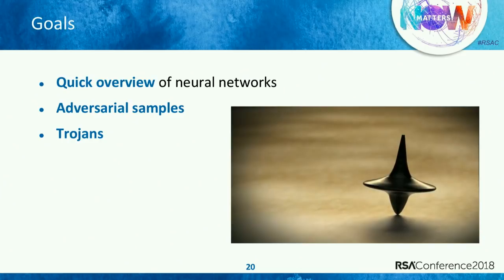I'll start with a quick overview of deep neural networks, then move on to adversarial samples — where given a defined neural network, I want to force it to produce the wrong output. I'll proceed in three stages, the third of which uses your own neural network to help attack you. In the second section, I'll focus on Trojans — where I'm no longer trying to force the wrong output, but rather to backdoor your network so it naturally produces the wrong output for values I care about. On the third stage, I'll try to get you to backdoor your own network.